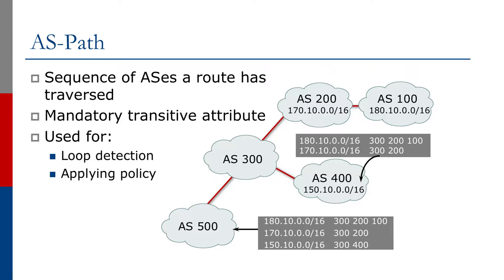The AS path tells you where the prefix has originated and all the intermediate autonomous systems it has traversed. This is extremely useful for policy. You may have a policy which says you don't want a prefix that's come through a particular autonomous system, or you may want to increase or reduce the priority if the prefix has gone through a certain autonomous system. You can make a lot of policy decisions based simply on the path the prefix has taken to reach you.